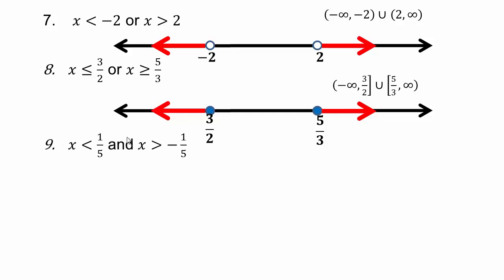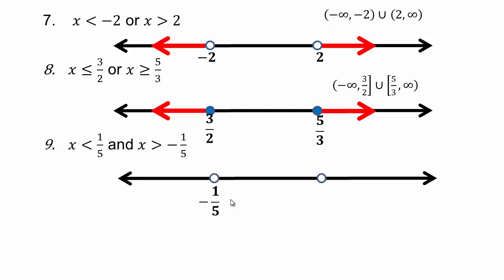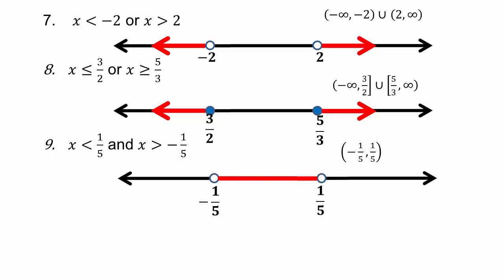Remember, negative infinity means keep going to the left, and positive infinity keeps going up from the number. For x greater than negative one-fifth and x less than one-fifth — this is an 'and': x smaller than one-fifth goes left, x bigger than negative one-fifth goes right. Simultaneously, it has to be the region right in between. The interval notation is open bracket, negative one-fifth, to one-fifth, open bracket.